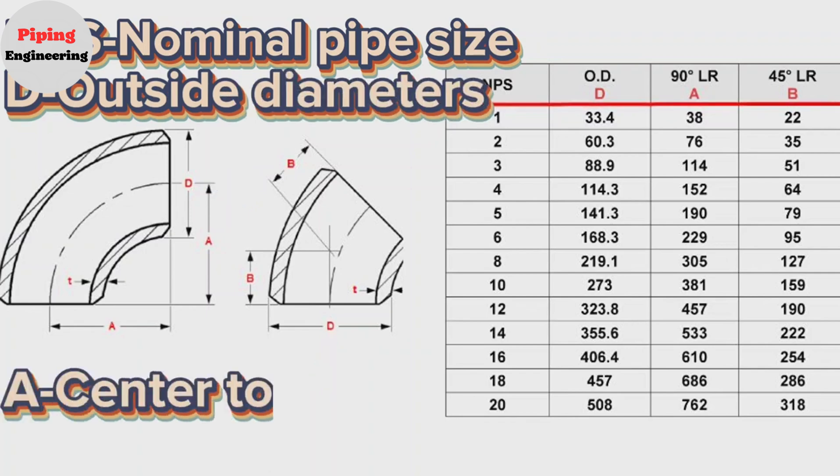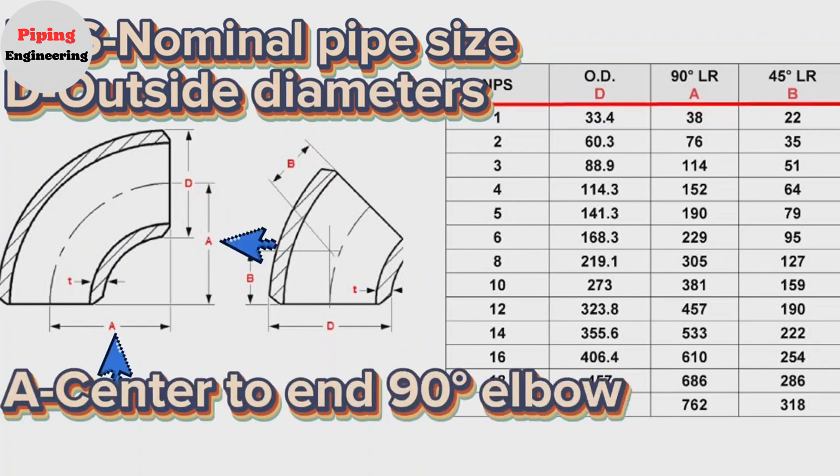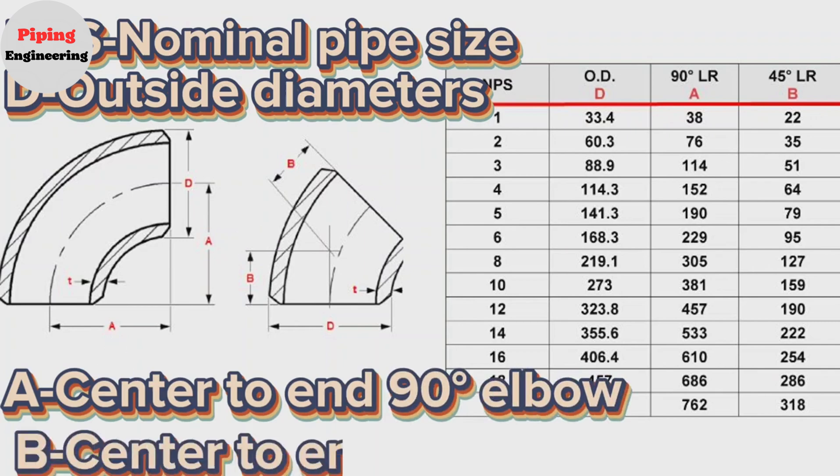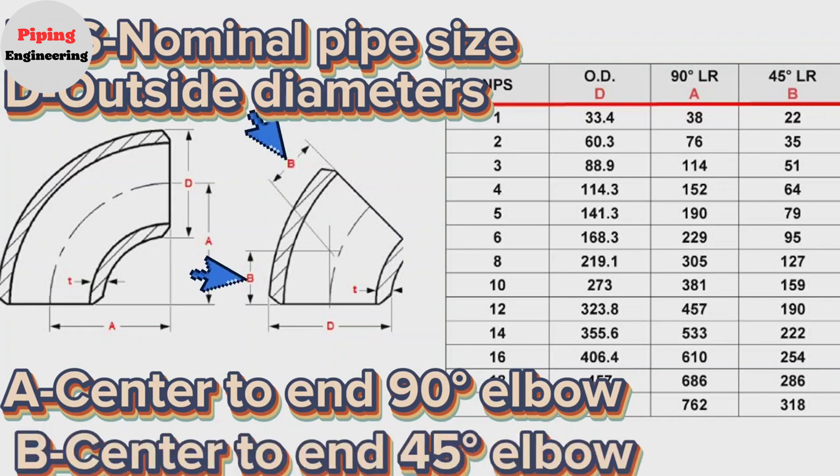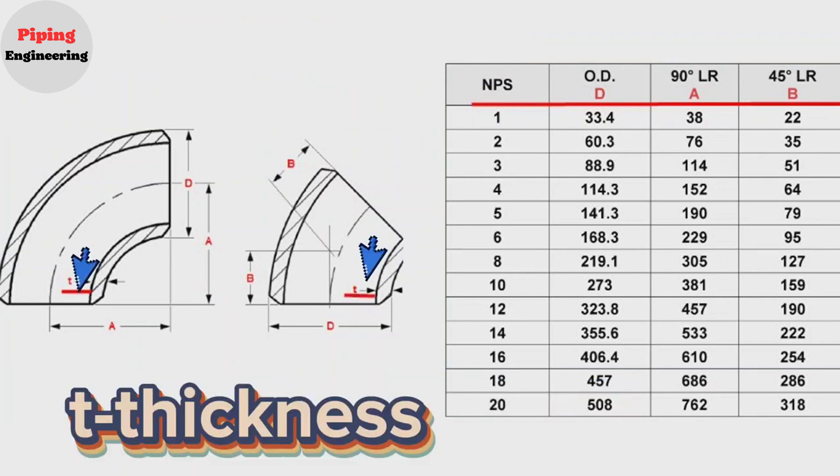A means center to end dimension of long radius and 90 degree elbow. B means center to end dimension of long radius 45 degree elbow. T means material thickness of elbow.